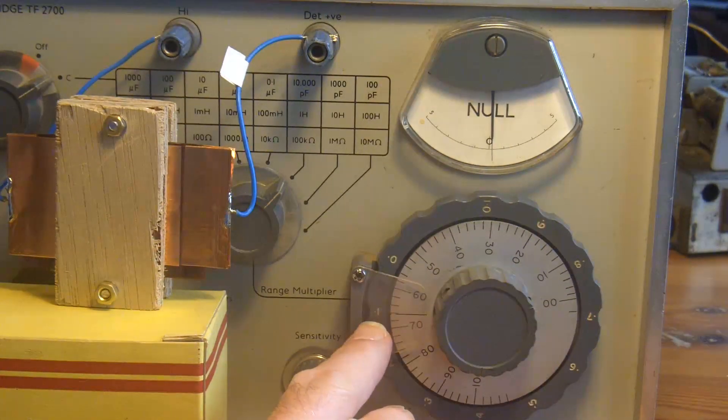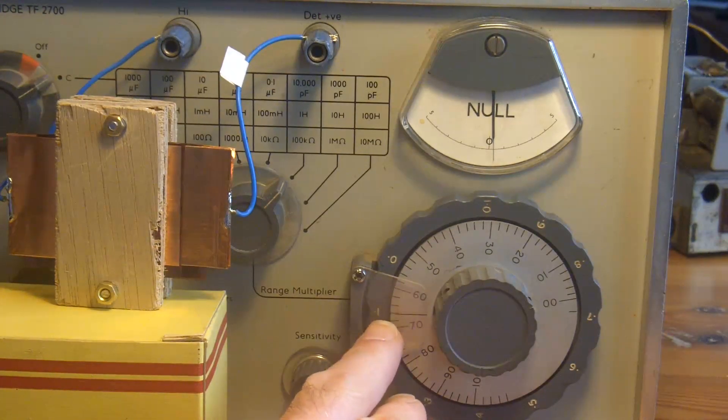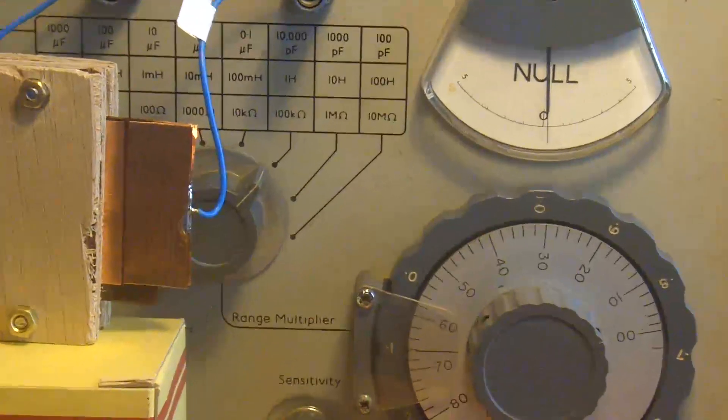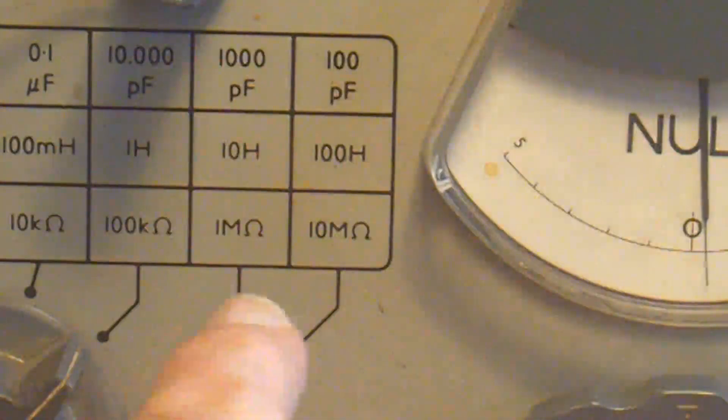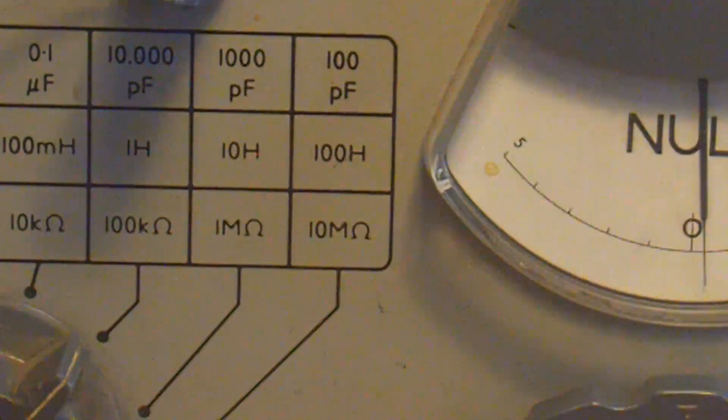OK, so we've got 1.66. So 1.6246. I'll just zoom in there. So that's the 10,000 pF scale up there, and then the multiplier.